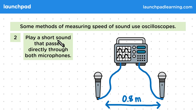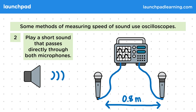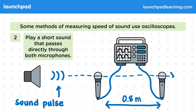In step two, play a short sound that passes directly through both microphones. We only want to use a short sound, called a sound pulse, which will help us when reading the display. This sound needs to be directed through both microphones, so the sound travels the same distance as we just measured.